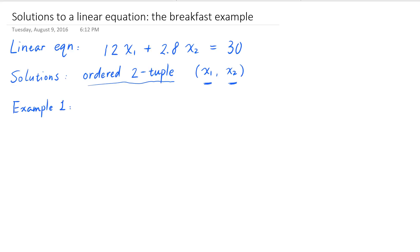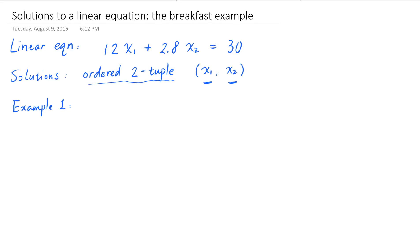I don't know how to solve the equation yet, but I can already figure out the solutions in some extreme cases. For example, let's verify that the 2-tuple (0, 30/2.8) is a solution of this equation. That is to say, verify x sub 1 equal to 0 and x sub 2 equal to 30 over 2.8 is the solution of this equation.